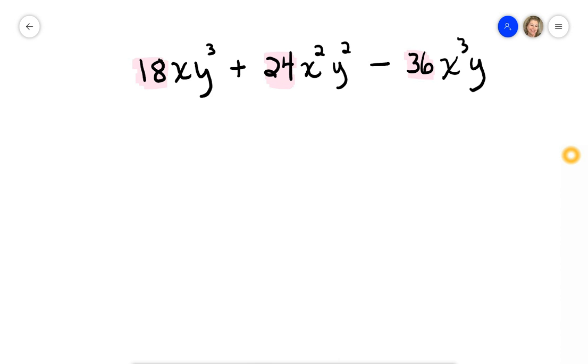Now, they're all even numbers, which means they're divisible by 2, but they're also all divisible by 3. 3 goes into 18 six times, 3 goes into 24 eight times, and 3 goes into 36 twelve times.